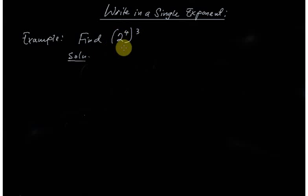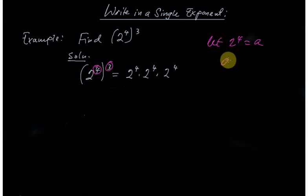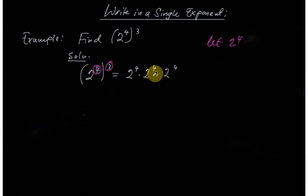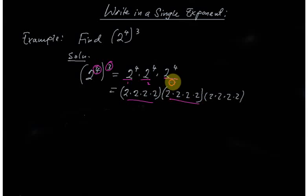To write this as a single exponent, we first undergo some calculations. If we let two to the four equal a, then the expression becomes a to the power three, which is a times a times a. Since each a is two to the four, we get two times two times two times two, repeated three times — giving us three groups of four twos.